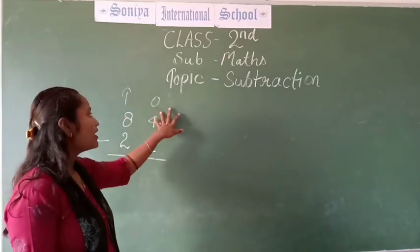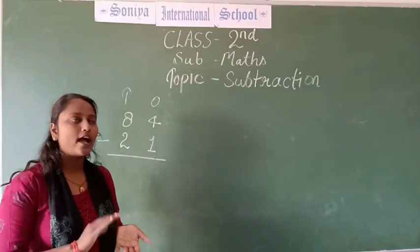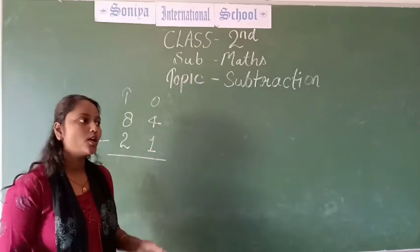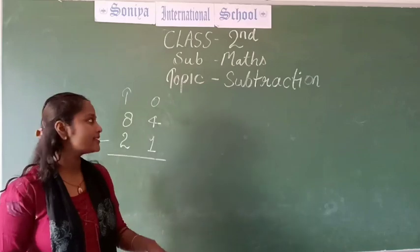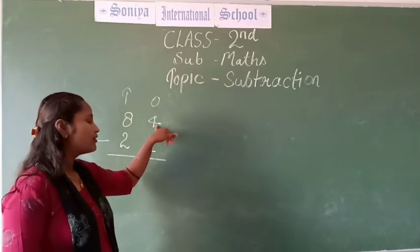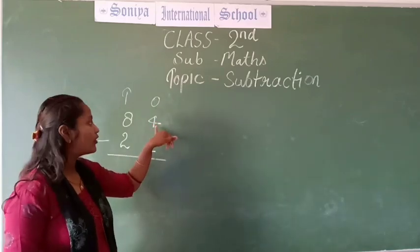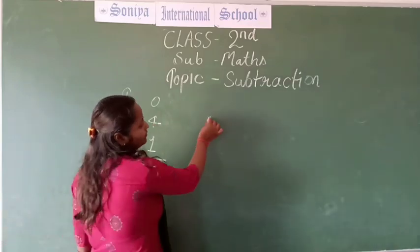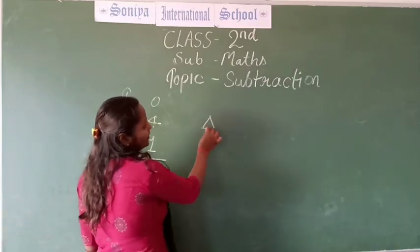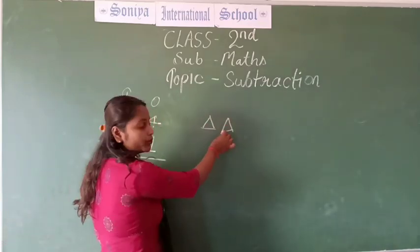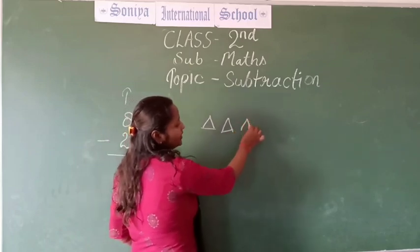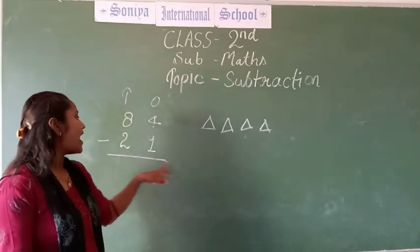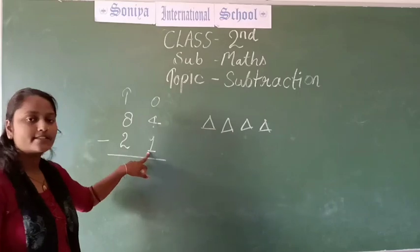So, if you are doing anything like either addition, subtraction, or multiplication, you always start from 1s. So let's see. What is this? This is 4. So we are drawing 4 triangles: 1, 2, 3, 4. So this is 4 triangles.